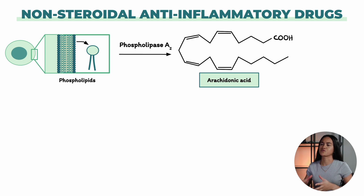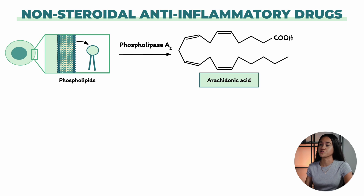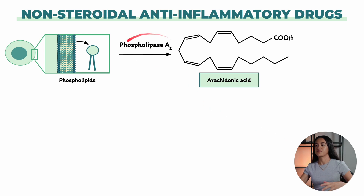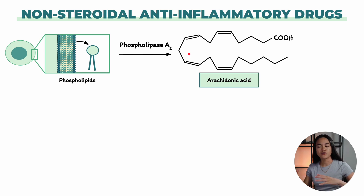This process starts with arachidonic acid, which is stored in the cell membrane as part of phospholipids. Arachidonic acid is an unsaturated fatty acid and it's a precursor to produce eicosanoids, which are lipid mediators that help regulate things close to where they are made. It's released when the enzyme phospholipase A2 cleaves it from the membrane. Once released, arachidonic acid can follow several metabolic pathways depending on the type of cell, the specific enzymes present, and the stimulus that triggered the release.